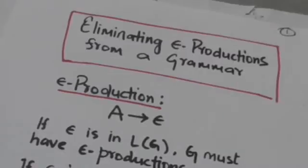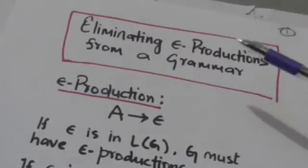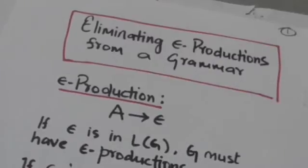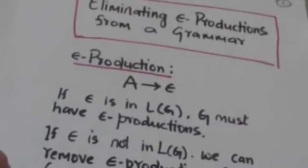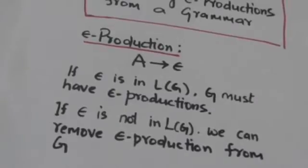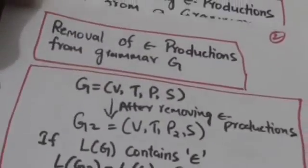Hello friends, welcome back. In this tutorial we will study how we can eliminate empty productions from a given grammar. Productions of a context-free grammar of the form A derives empty string are called empty productions. If there is an empty string in the language of a grammar, then the grammar must have empty productions. But if the language of the grammar does not have empty string, we can remove empty productions from that grammar.